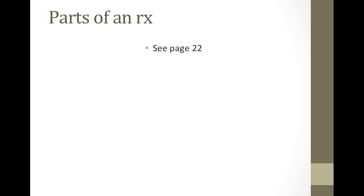The first thing that we'll talk about today is the parts of a prescription. The first part is going to be the patient information. On each prescription, the following information needs to be provided: full name of the patient, the address of the patient, and the date of birth. These are to help avoid confusion in case there are juniors and seniors in the home. The date of birth helps narrow things down if there's a common name like John Smith, so you have the one address and date of birth to narrow the options down.